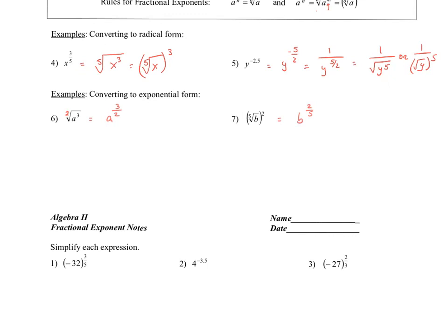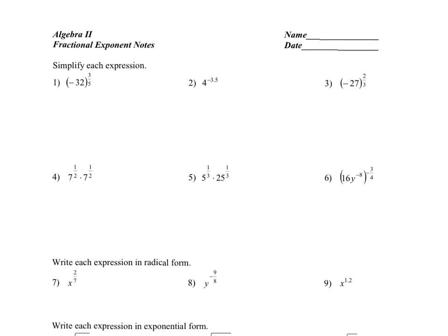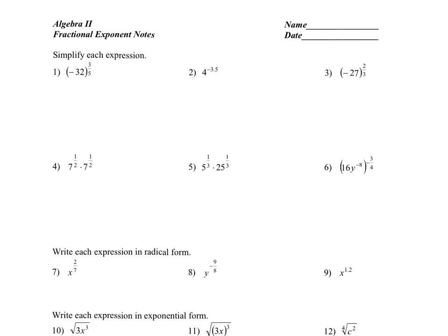Now let's take a look at simplifying some of these expressions. I made a separate video involving the exponent chart — if your teacher shares that with you, you can use the exponent table to simplify some of these. But if you're not using the exponent table, this is going to become the fifth root of negative 32, and I'm going to raise that quantity to the third power. I'd rather take the root first before raising it to a power because I'm working with smaller numbers. The fifth root of negative 32 is negative 2, and raising that to the third power gives me negative 8.